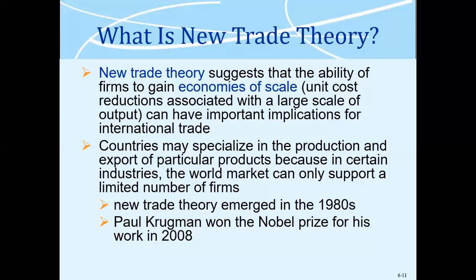A student suggested it's because they produce everything. The instructor clarified that China might not produce everything — for example, Google and Microsoft are not produced by China. But the key point is that China actually started producing everything on a mass scale. Whatever they produce, they produce it on a mass scale.